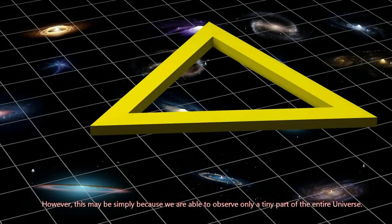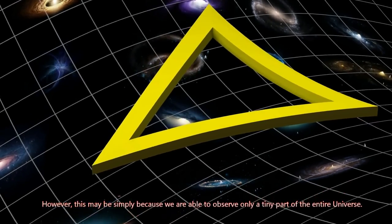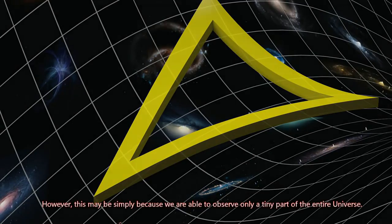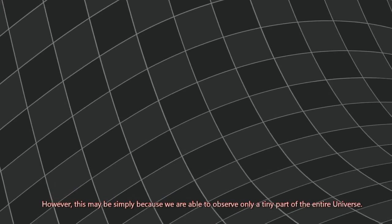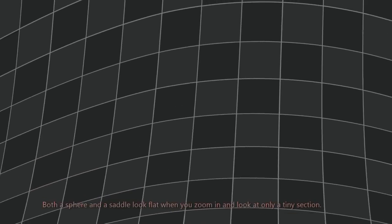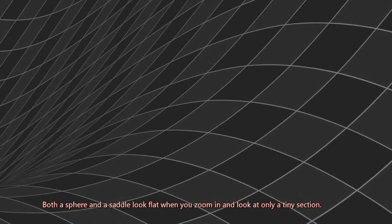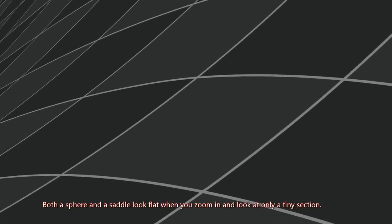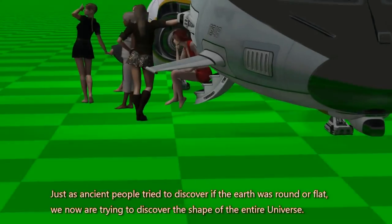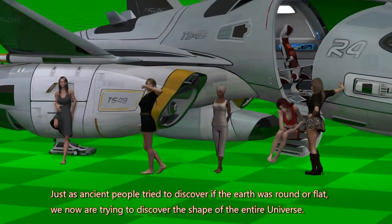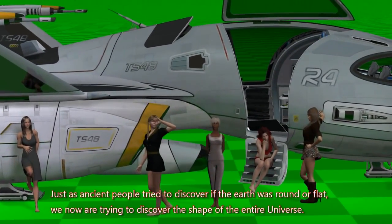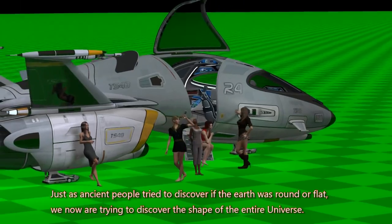However, this may be simply because we are able to observe only a tiny part of the entire universe. Both a sphere and a saddle look flat when you zoom in and look at only a tiny section. Just as ancient people tried to discover if the Earth was round or flat, we now are trying to discover the shape of the entire universe.